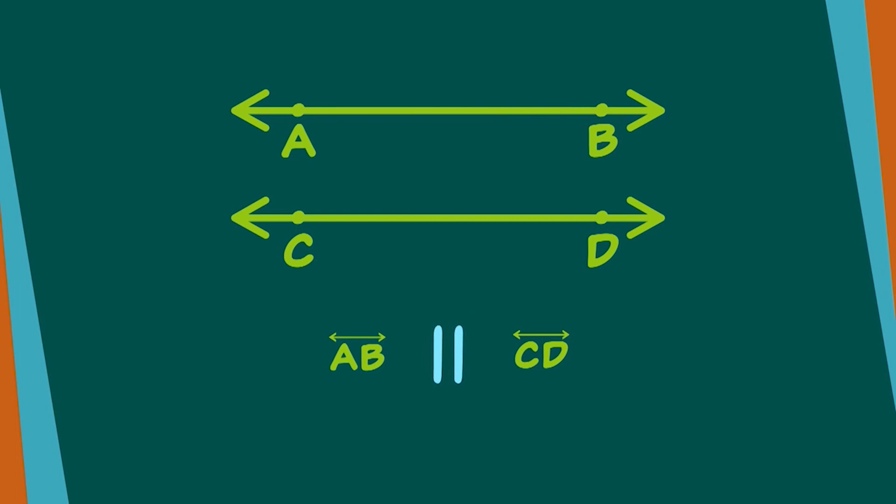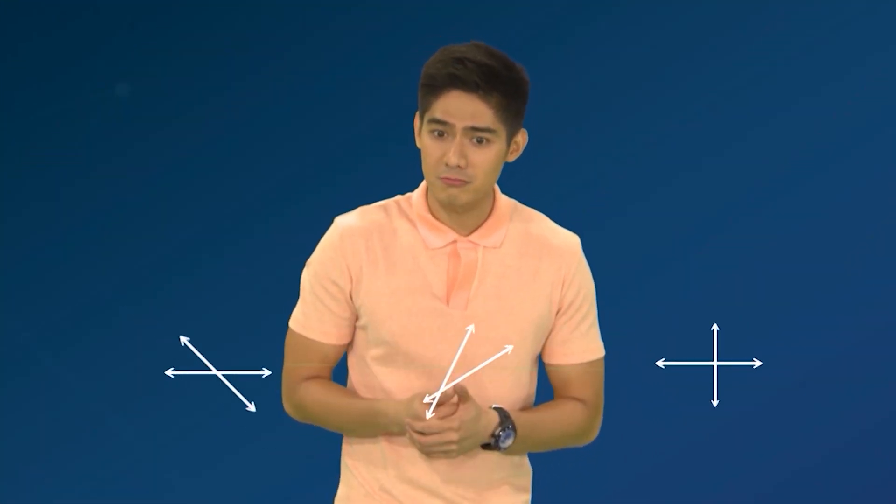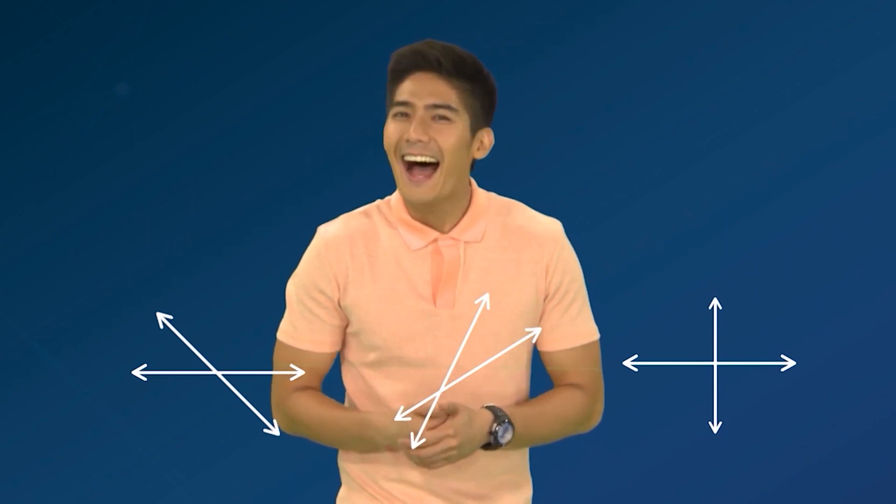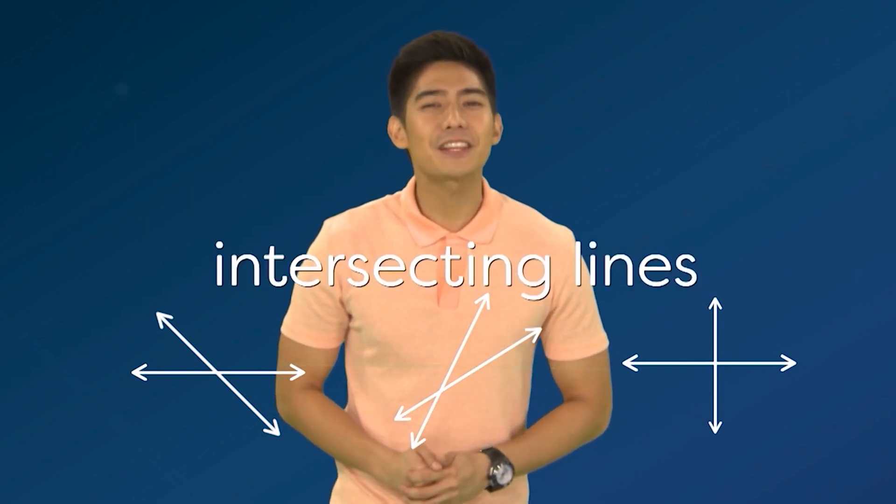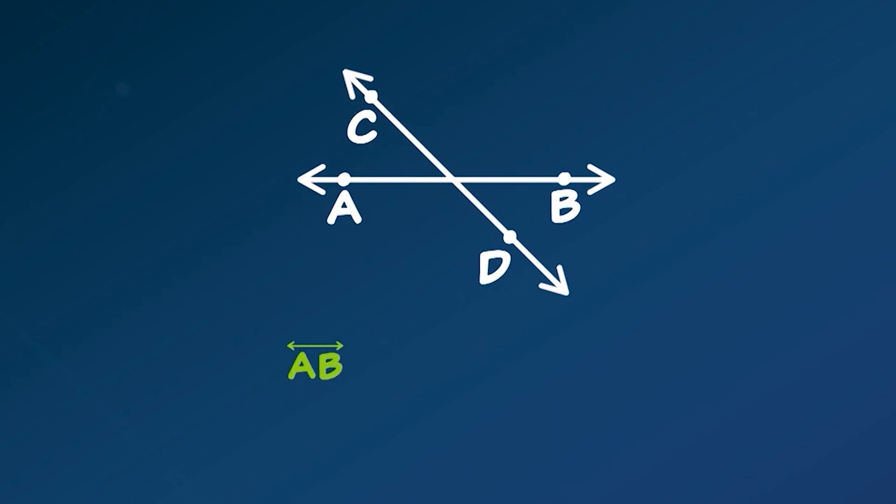Parallel lines din sila. Meron ngang lines na nagtatagpo, tulad ng mga ito. Ang tawag sa kanila ay intersecting lines. Wala talagang simbolong ginagamit para sa intersecting lines. Kung kailangang isulat, sabihin na lang na line AB intersects line CD. Ang dalawang line ay nagtatagpo sa isang point.